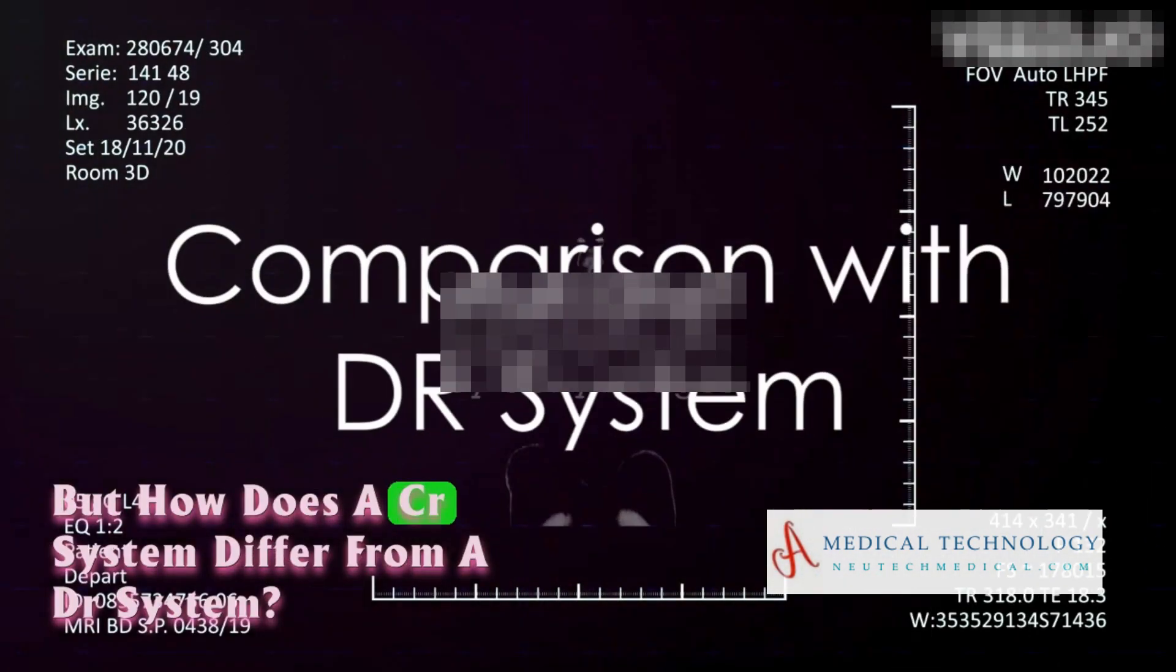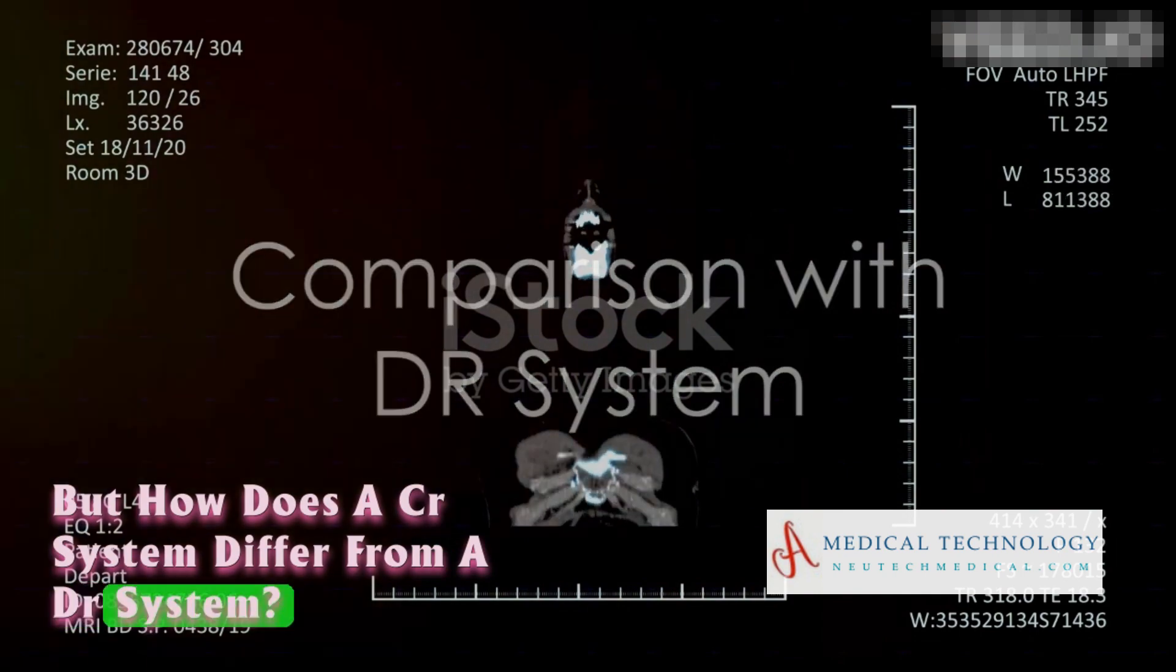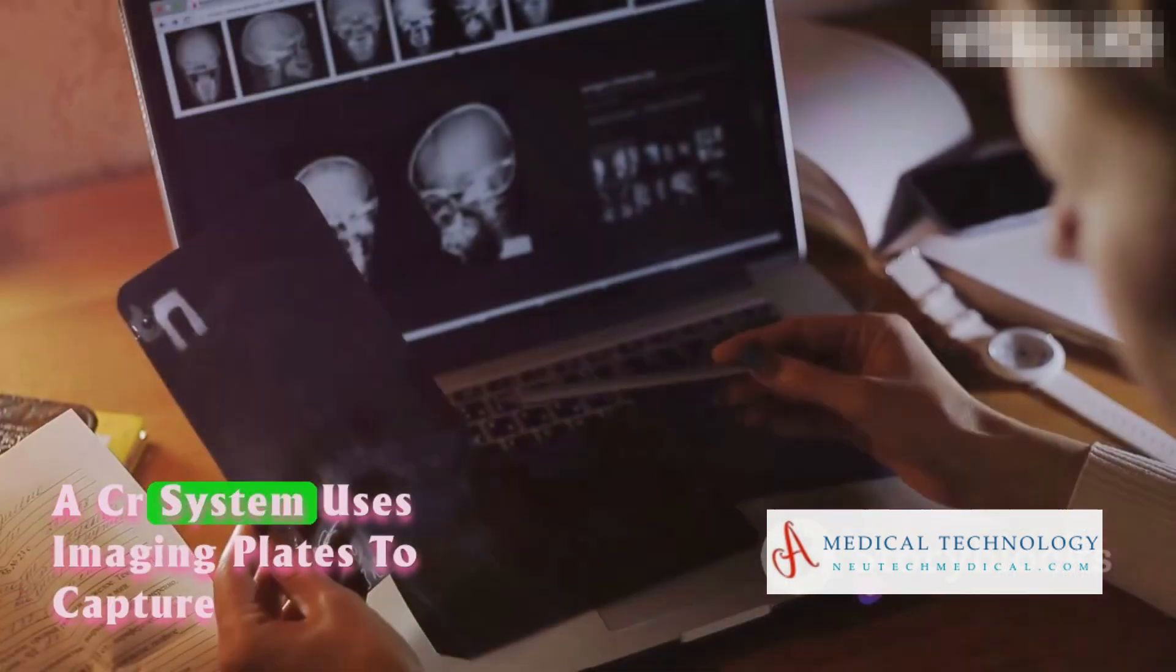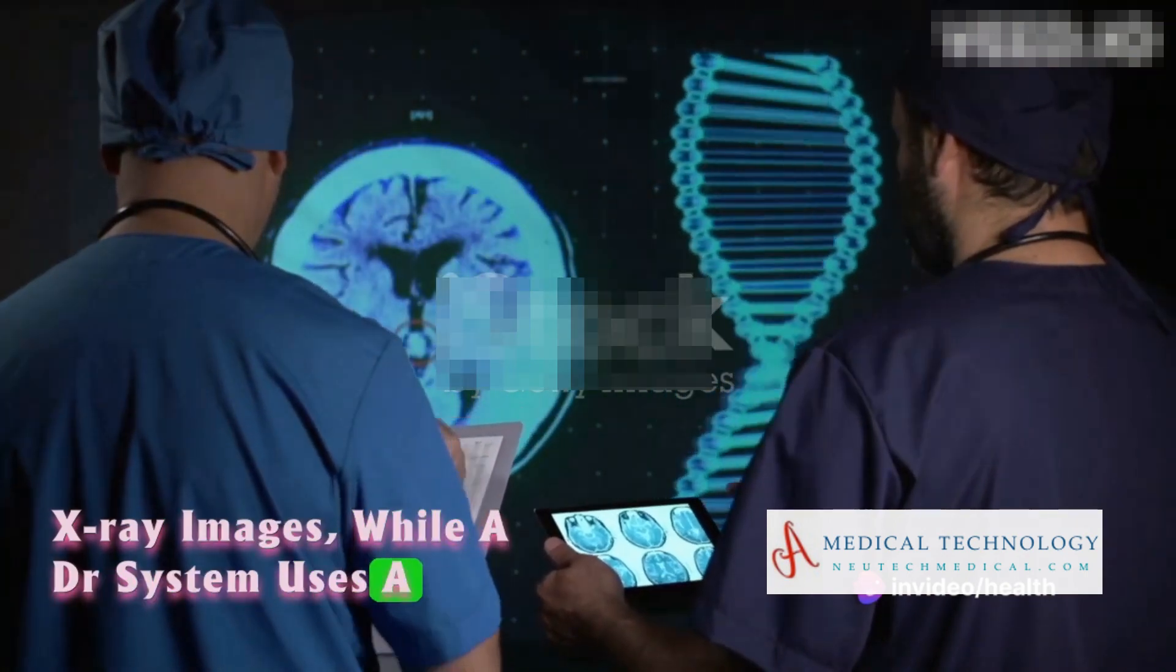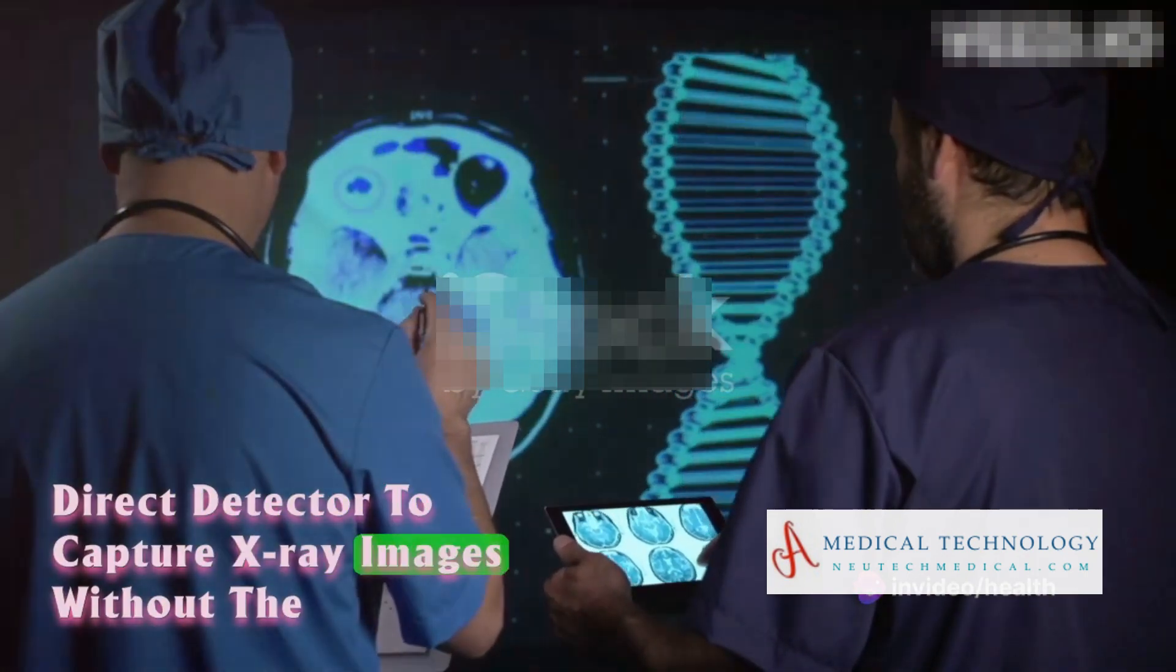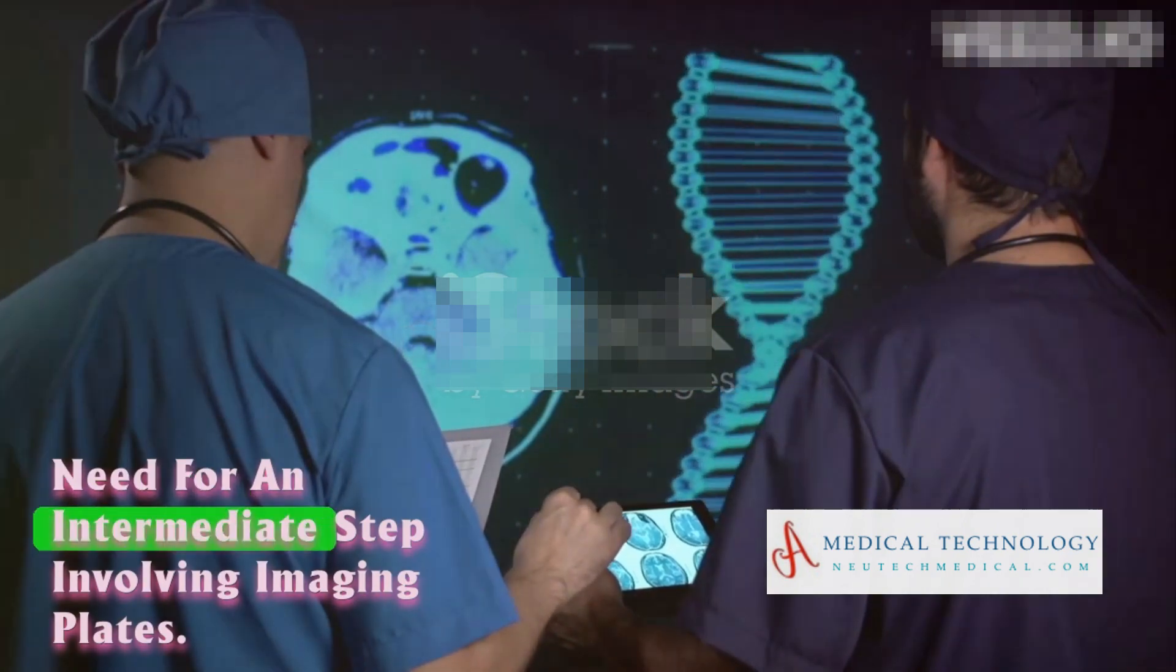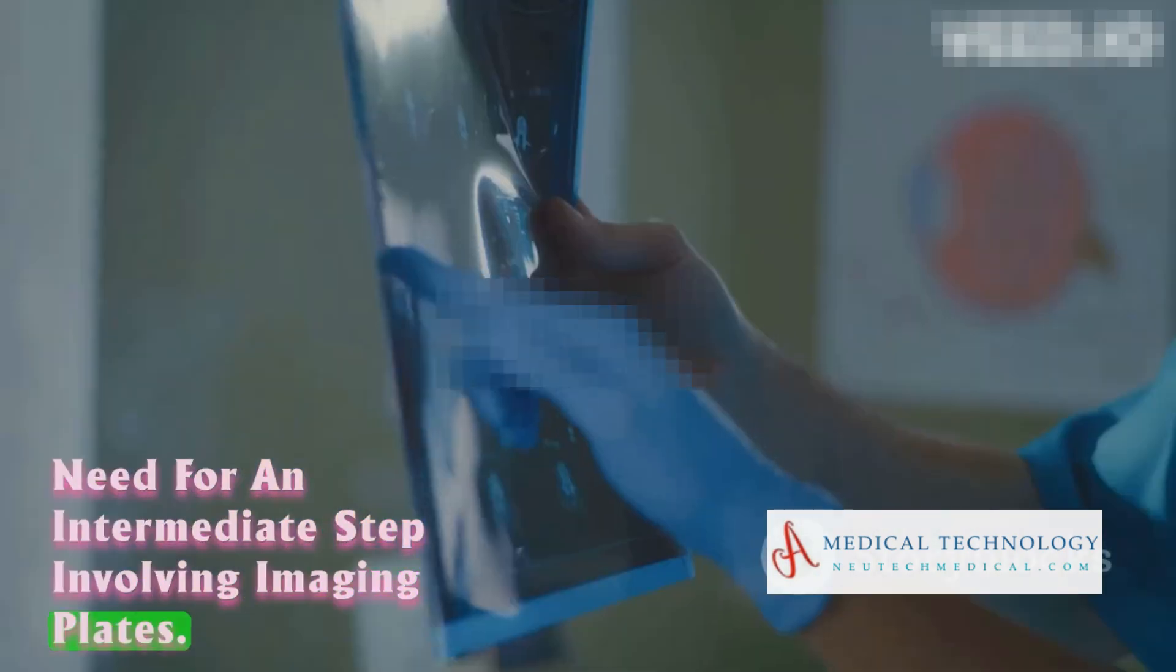But how does a CR system differ from a DR system? A CR system uses imaging plates to capture X-ray images, while a DR system uses a direct detector to capture X-ray images without the need for an intermediate step involving imaging plates.